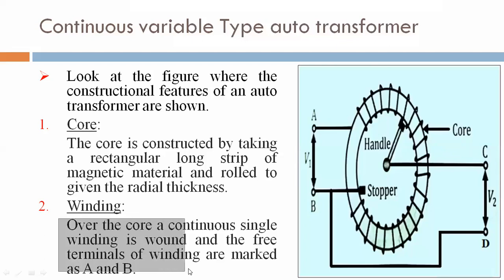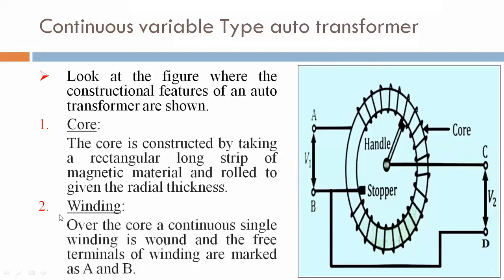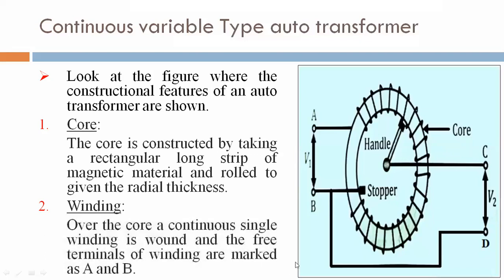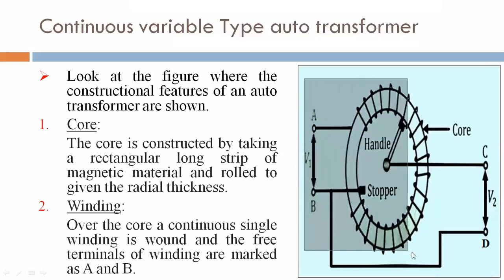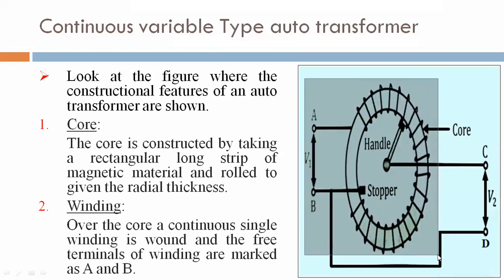Over the core, a continuous single winding is wound — that is why we say auto transformer has a single winding. The free terminals of the winding are marked as A and B. Here, A is the starting terminal — it rounds on the core and ends up at terminal B. We can see this clearly in the figure.